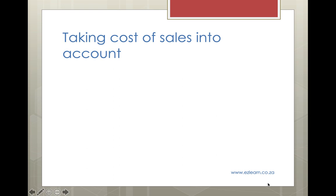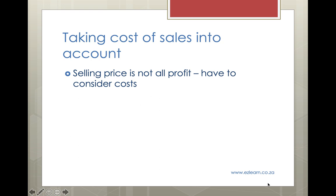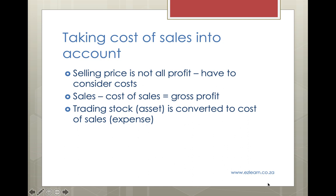How do we take cost of sales into account? Remember that the selling price of 300 Rand is not all profit — we have to consider the costs. It's not like rendering a service where all money received is income. In this case the income is only the difference between the selling price and the cost price. Sales minus cost of sales gives us the gross profit. Our trading stock asset needs to be converted to the expense 'cost of sales' because we no longer have the stock, and the expense is important so we don't think we made more money than we actually did.